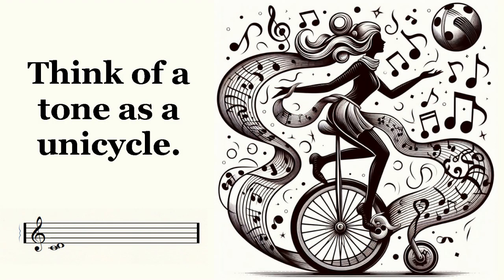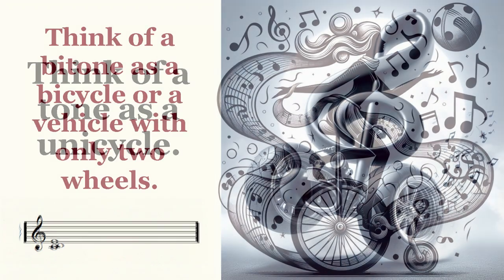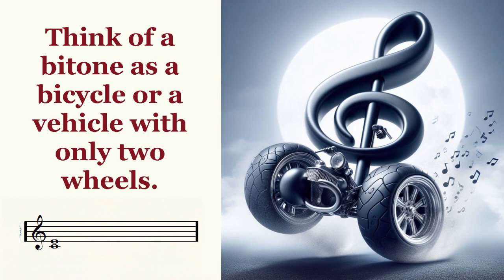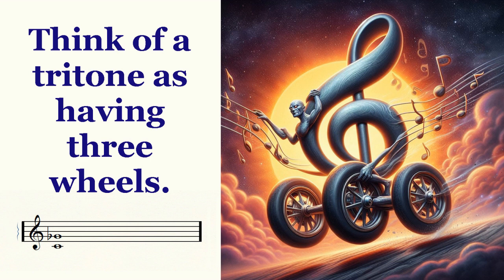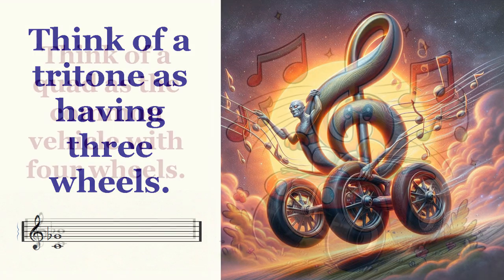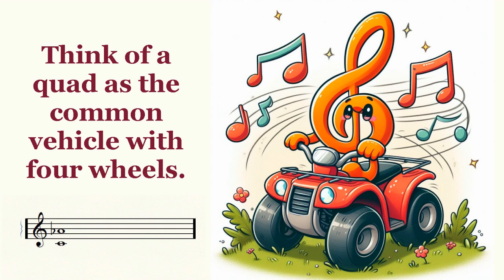Now let's examine those intervals in the first whole tone scale one by one. First we start off with a tone, and I'm going to use a picture of a unicycle. Then we have two tones which I call a bitone — this will have two wheels like a bicycle. Then there are three tones, universally called a tritone. Next is four tones which I like to call a quad, and it will have four wheels.